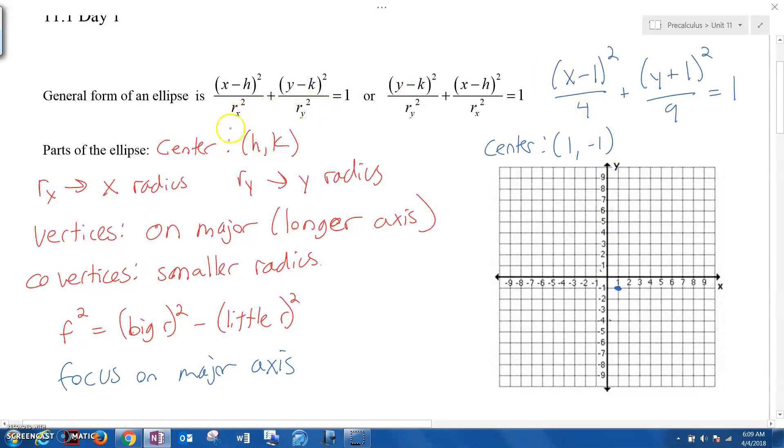Now remember, if you look at these formulas, the radii are squared at the bottom. So that means that rx, the one under the x, is now just 2. And the radii under the y is 3. And what that means is that I'm going to count from the center in the x direction out 2 this way and 2 that way. In the y direction, I'm going to count 3 up, 3 down. And then we have our ellipse.